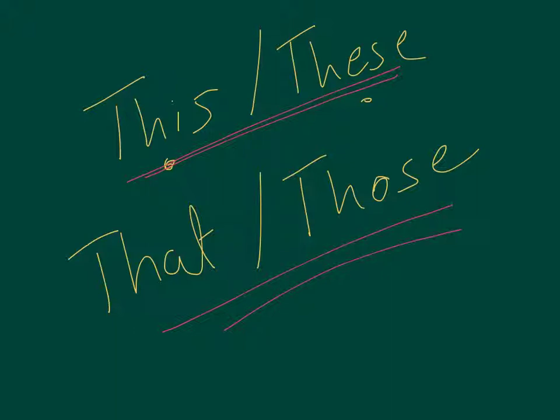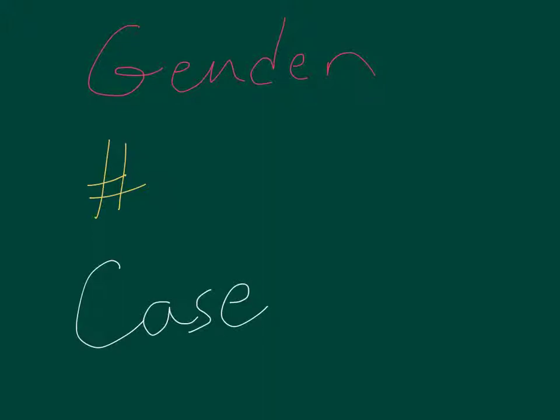But their forms are the same regardless of whether they're pronouns or adjectives. Let's take a look. Just as with all of our other adjectives, these demonstrative adjectives and demonstrative pronouns take all the same characteristics of nouns. They have gender. They can be masculine, feminine, neuter. They have number. They can be singular or plural. And they have case. So they can be nominative, genitive, dative, accusative, or ablative. That leads us to a good number of forms here that we're going to take a look at and start to memorize.